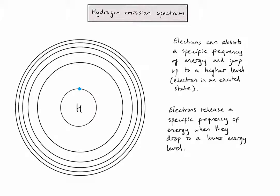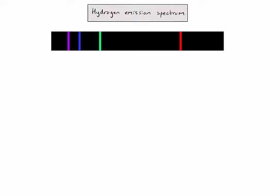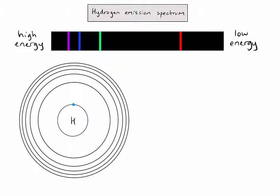Let's now identify the exact transitions occurring to produce our hydrogen emission spectrum. On the emission spectrum, the low energy end of the visible light spectrum is at the red side, and the high energy end is at the violet side. Drawing the Bohr model of a hydrogen atom, the energy levels are labelled as n equals 1 for the first energy level, n equals 2 for the second energy level, and so on.